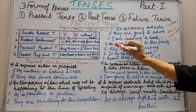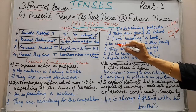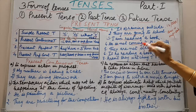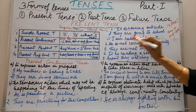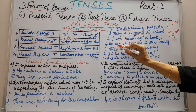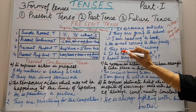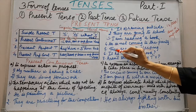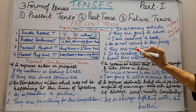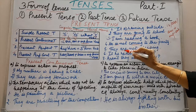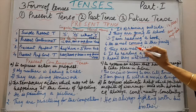He is not coming to the party — he is singular, so we have used is plus ing form of verb. Since it is a negative sentence, we have split the auxiliary and main verb and used not in between. They are not sleeping — they is plural, so we have used are plus ing form of verb. Again it is a negative sentence, so we have split the auxiliary and main verb and used not in between.